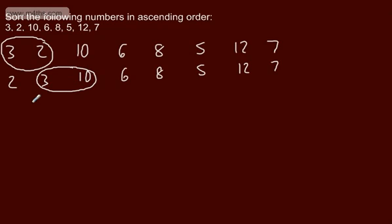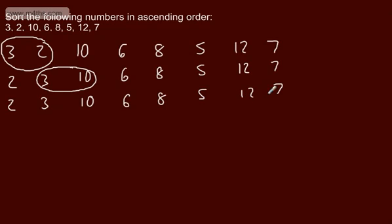3 and 10 are not going to change — 3 is less than 10 — so we write it out again: 2, 3, 10, 6, 8, 5, 12, and 7. Each time we go through a full pass, one of these values will be in the correct place. Once I've gone right the way through, the largest number will be at the end.